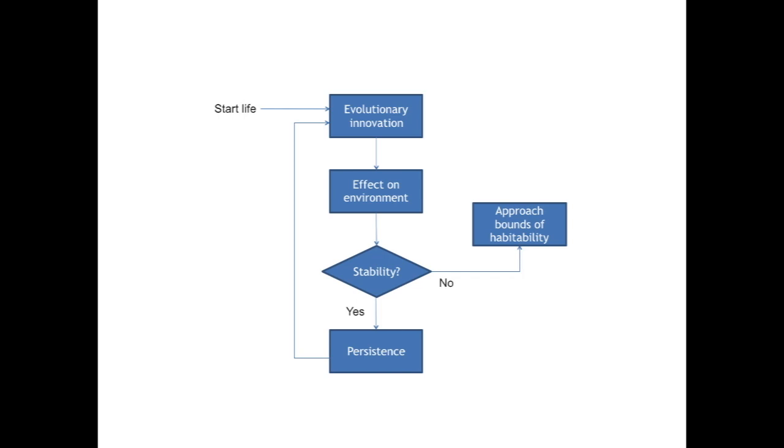One way this process could end is for life's effects on its environment to decrease, which can simply arise from an overall decrease in the amount of life. The result of this is that those destabilizing life-environment interactions are eliminated and the current life-environment system undergoes a reset.